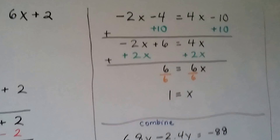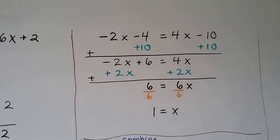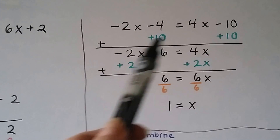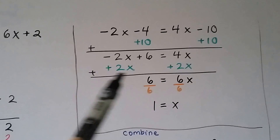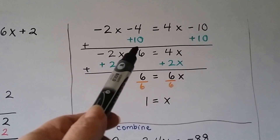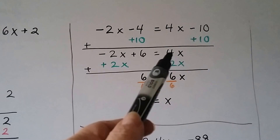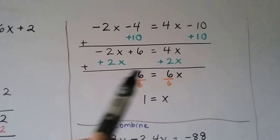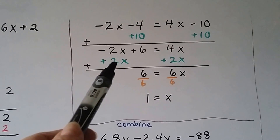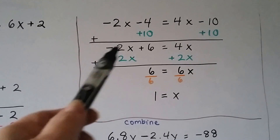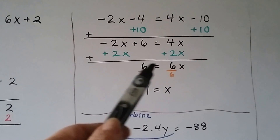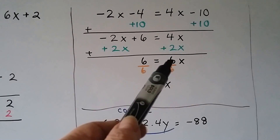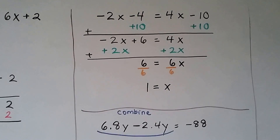Here we have negative 2x minus 4 equals 4x minus 10. I chose to start with the numbers first, so I'm going to add 10 to both sides — that creates a zero pair — giving me negative 2x plus 6 equals 4x, because negative 4 plus 10 is positive 6. Now I can get this negative 2x out of here by adding a positive 2x to both sides. That creates a zero pair, and we end up with 6 equals 6x. Dividing both sides by the coefficient 6, we get x equals 1.